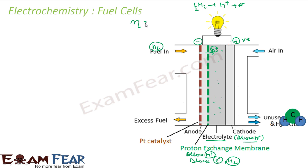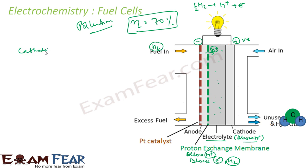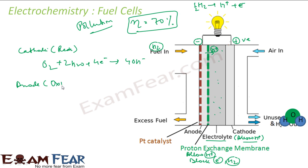A fuel cell has an efficiency of about 70%, compared to about 40% for a thermal power plant. It is also pollution-free — a very good way to go green. Looking at the reactions: at the cathode, reduction occurs — oxygen reacts with electrons and water to form 4 OH⁻. At the anode, oxidation occurs — hydrogen reacts with OH⁻ to form water and releases electrons. The overall reaction is: H₂ + O₂ → H₂O.